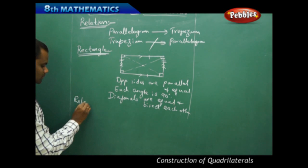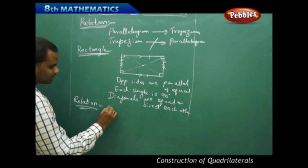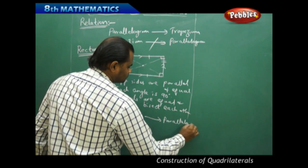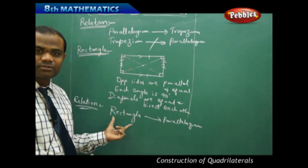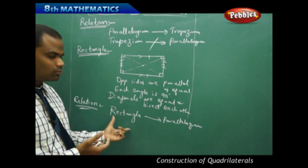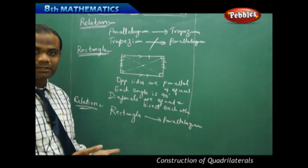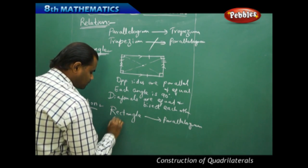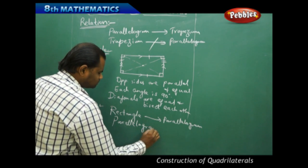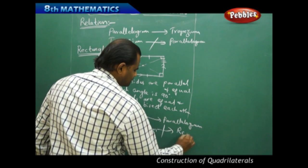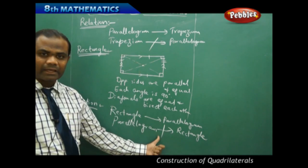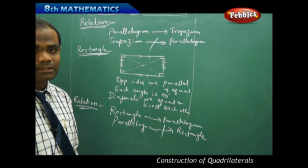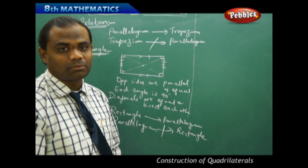Every rectangle is a parallelogram, because two pairs of sides of a rectangle are parallel and equal, just as in a parallelogram. The only additional property of a rectangle is that each angle is 90 degrees. But every parallelogram cannot be called a rectangle unless each of its angles is 90 degrees. Next comes the square — let's see the different properties of a square.